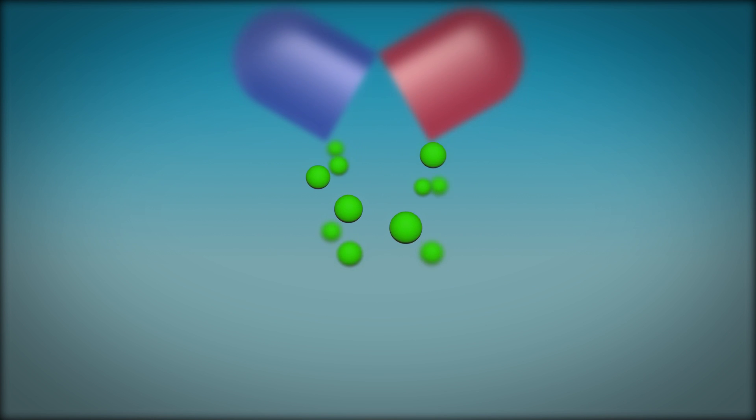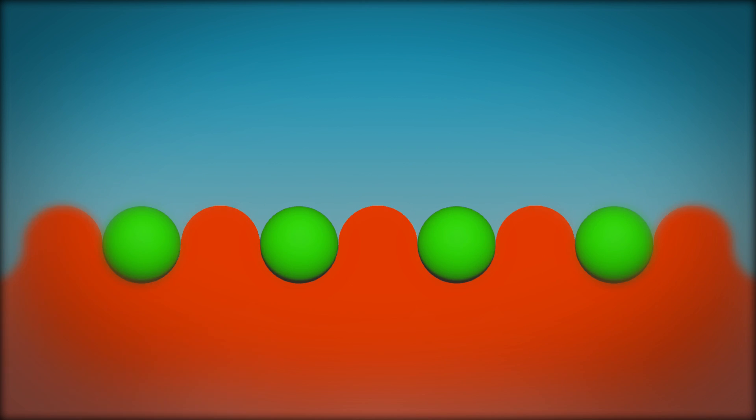A drug works by binding to a receptor in cells or tissue and activating that receptor to cause a response in the cells or tissue. This is known as an agonist.